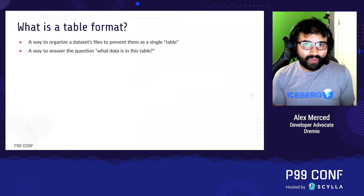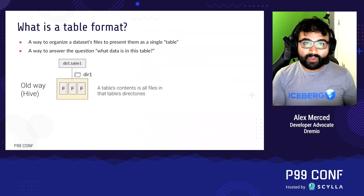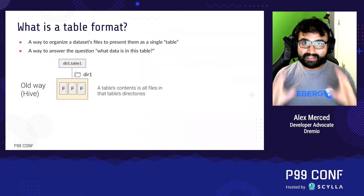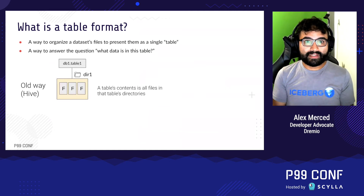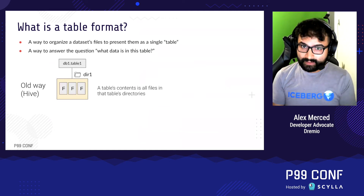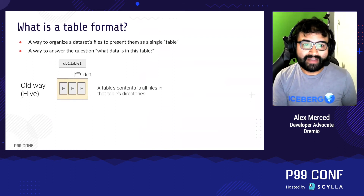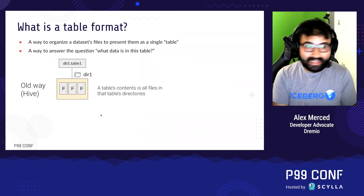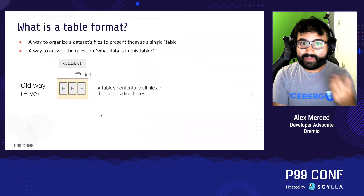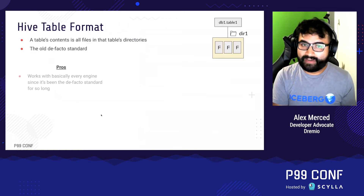The traditional way this has been done is through a platform called Hive. It took a directory-based approach: if the file is in a folder, it's part of the table; if it's not in the folder, it's not part of the table; and if it's in a subfolder, it's part of a partition. So it relied on the directory structure of the files to determine what's in the table. This worked really well and was a standard for a long time, giving us a de facto standard.